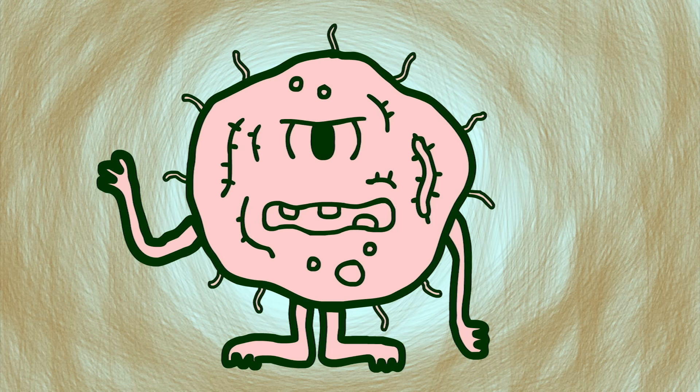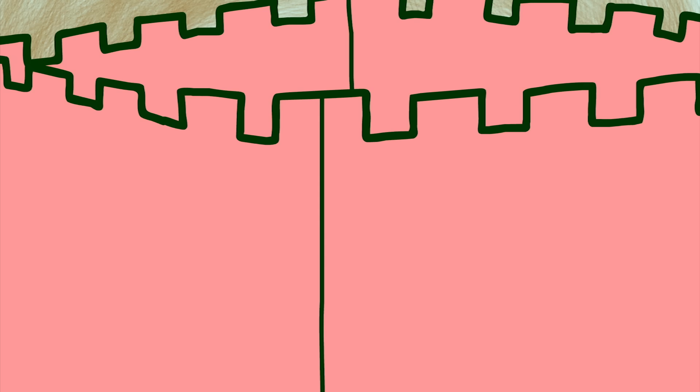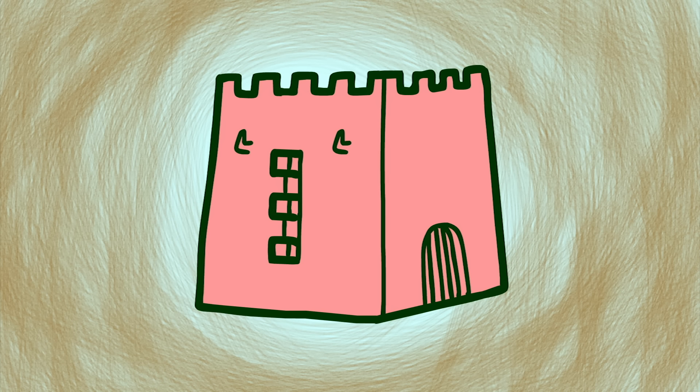Every living thing on Earth is made of cells, from the smallest one-celled bacteria to the giant blue whale to you. Each cell in your body is surrounded by a cell membrane, a thick, flexible layer made of fats and proteins that surrounds and protects the inner components. It's semi-permeable, meaning that it lets some things pass in and out but blocks others.